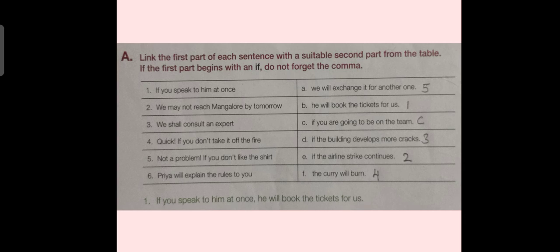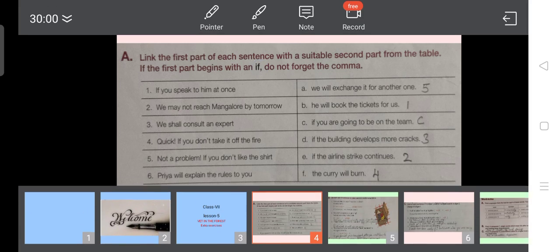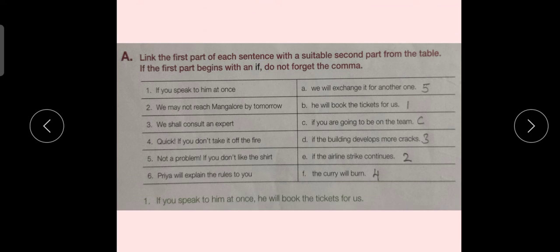First part of sentence number 1. If you speak to him at once, we will match this part with option B in second section. He will book the tickets for us. Dear students, as it was told in the question, that if the sentence is beginning with if, we have to put a comma. So, you can also see down here below that we have used a comma to write the second part. See, as you can see this, before writing the second part, we have put a comma over here.